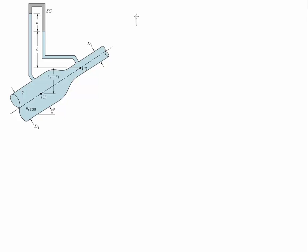From Bernoulli's we can say that P1 plus one-half rho V1 squared plus gamma Z1 is equal to P2 plus one-half rho V2 squared plus gamma Z2. Notice that we know the elevation difference between these two points, so we keep those values. The pressures are what we're looking for, and the velocities can be related using continuity.